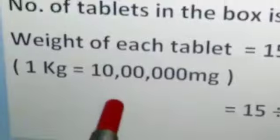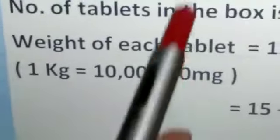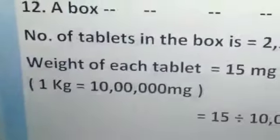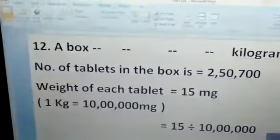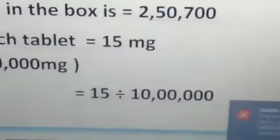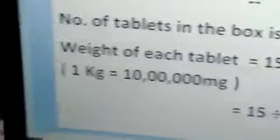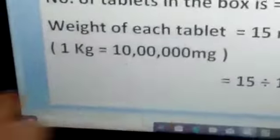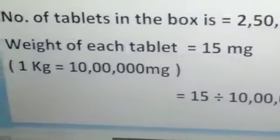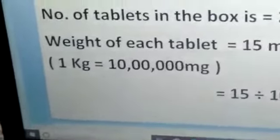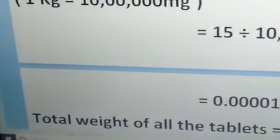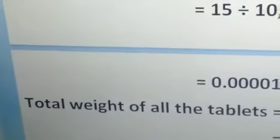We all know that in 1 kilogram, there are 10 lakh milligram. We have already discussed how to convert any of the unit to any other in class 5. I know you all can do with the help of that difference table. So you have to convert the smaller unit into greater. So definitely we will go for division. 15 divided by 10 lakh will give you this much of kilogram.